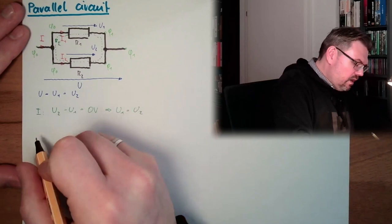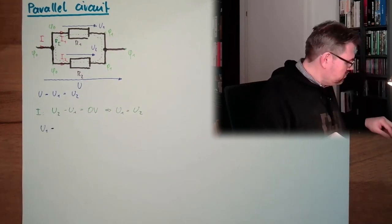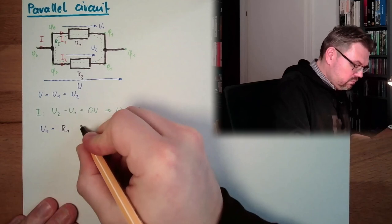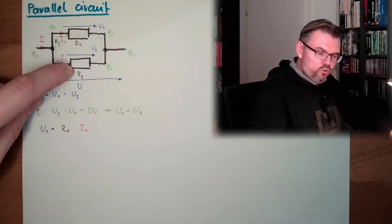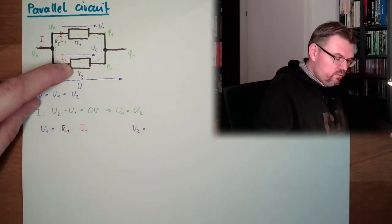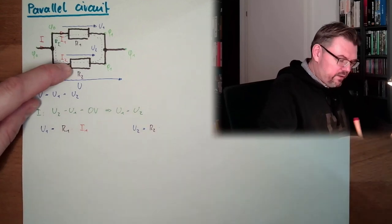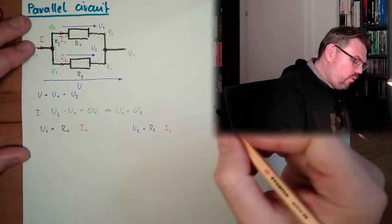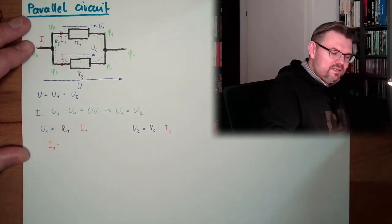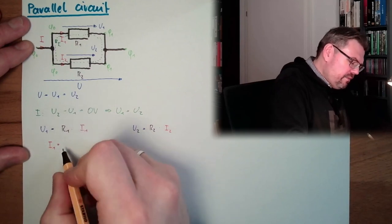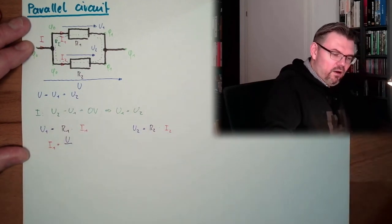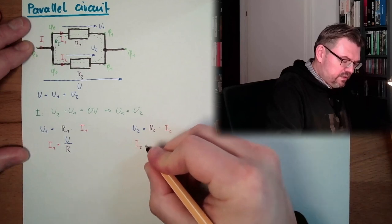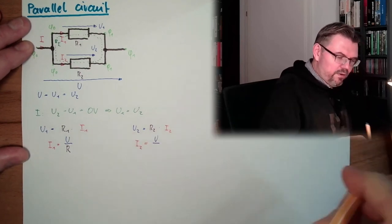So we have here U1 equals R1 multiplied by I1. Ohm's law here and Ohm's law here. U2 equals R2 multiplied by I2. And now I will express I1 with this. So this follows I1 equals, and now since I know U and U1, U2 is all the same, I'll just write U divided by R1. And also I2, I can express from this equation. This is U divided by R2.